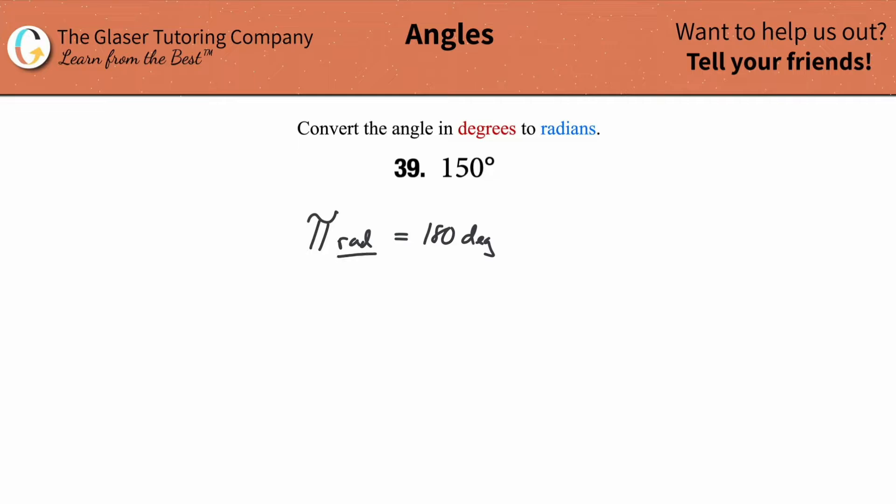This is just like saying kilometers and miles or something like that. They both measure distances, but they measure different distances relative to one another. Same thing with radians and degrees. They both measure angles, but they measure different values relative to one another.